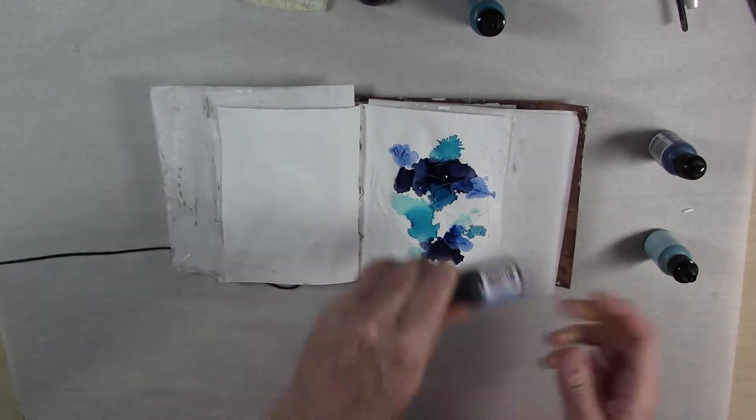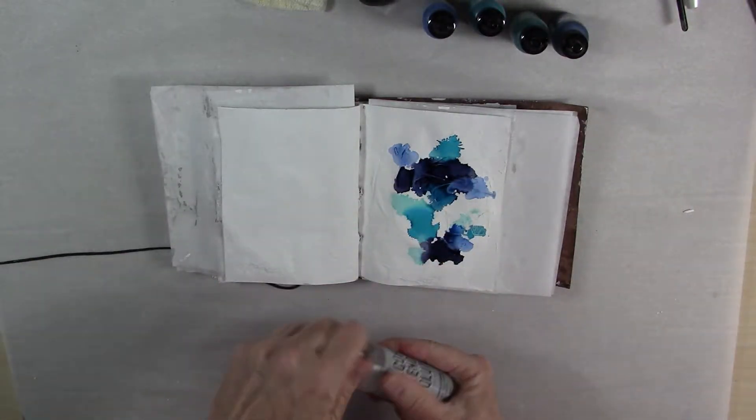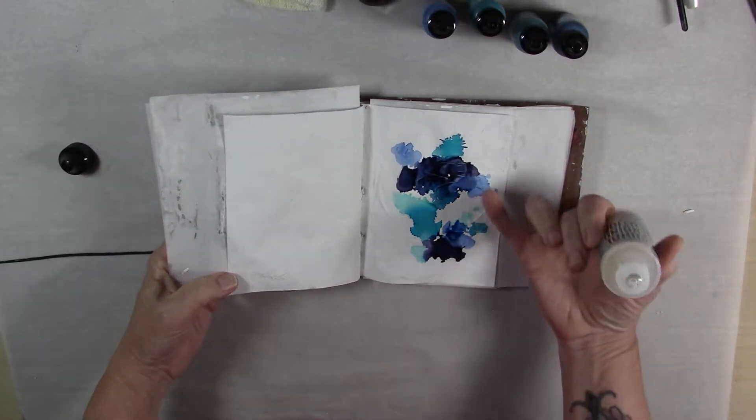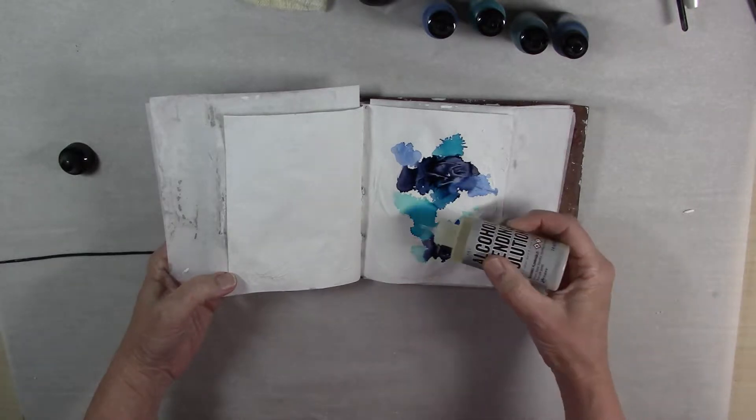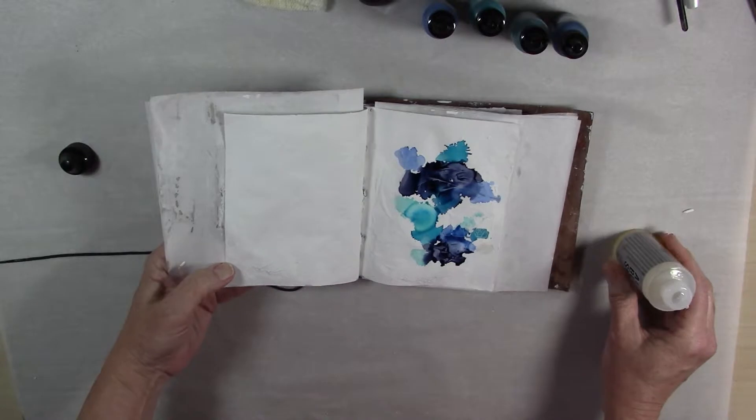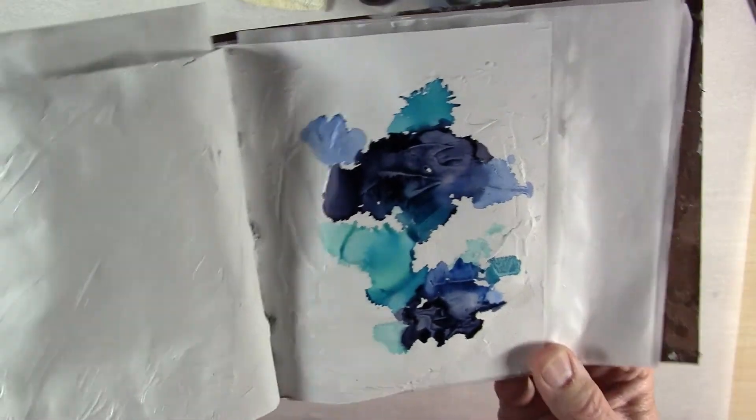And then just to get the colors to blend a little bit, I used the alcohol blending solution on each page. So I just dripped it in a couple of areas so you can see how it's reacting with the solution. It created just some cool effects on my page. I'll do a close up so you can see how that looks on the paper.